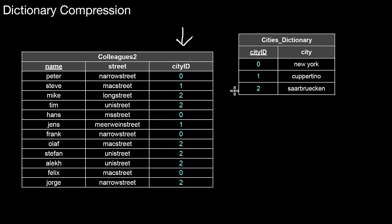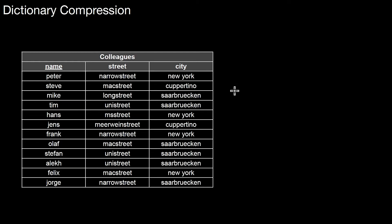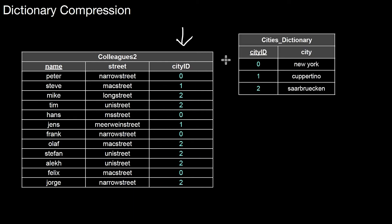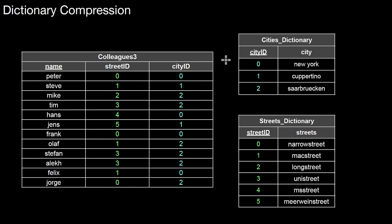So basically we split those tables into two tables. Before we had one table, colleagues, and now we split it — removing cities and creating colleagues2 and the cities dictionary. We get back to the original table by joining the two tables. We can do the same for other attributes. For the street attribute we introduce another dictionary called the streets dictionary, with a primary key street ID and the actual streets. The primary key here is used as a foreign key in a new table called colleagues3. This column is now less wide; we can use an integer type. The drawback is that whenever we need a specific attribute value, we have to join back to the streets dictionary.